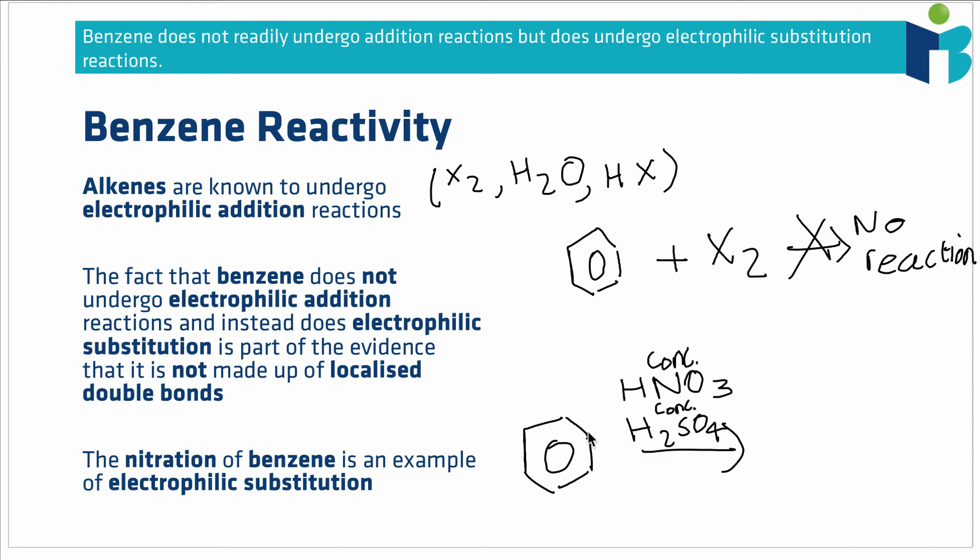you can get replacement of one of your hydrogens with an NO2 group known as a nitro group. So the product in this case is what's called nitrobenzene.